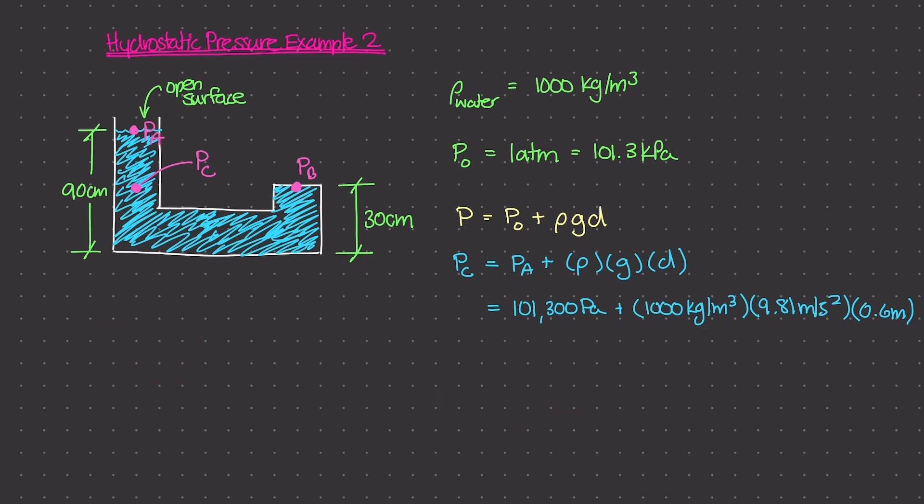Okay, so if we continue on with the problem, we can basically calculate 101,300 Pascals plus this ρ density times gravity times depth. And this is just a plug-and-chug. Just enter that into your calculator and we get the pressure at C is 107,186 Pascals or about 107.2 kilopascals.